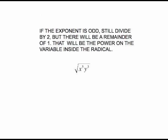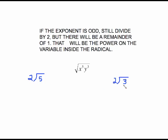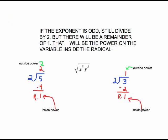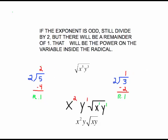For x to the fifth and y to the third, we do plain arithmetic. Divide 2 into 5: it goes 2 times evenly with a remainder of 1. Divide 2 into 3: it goes 1 time evenly with a remainder of 1. The quotient becomes the outside power and the remainder becomes the inside power. Since 2 went into 5 twice, that's x squared on the outside with a leftover x. Two goes into 3 once, giving y to the first outside with a leftover y. Cleaning it up: x squared y times the square root of xy.